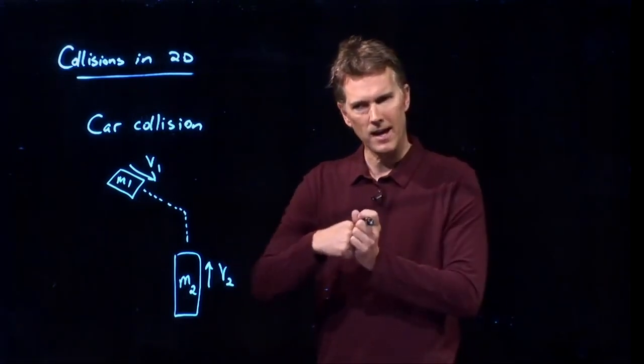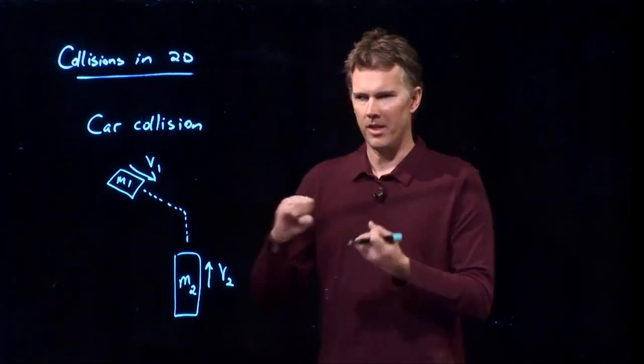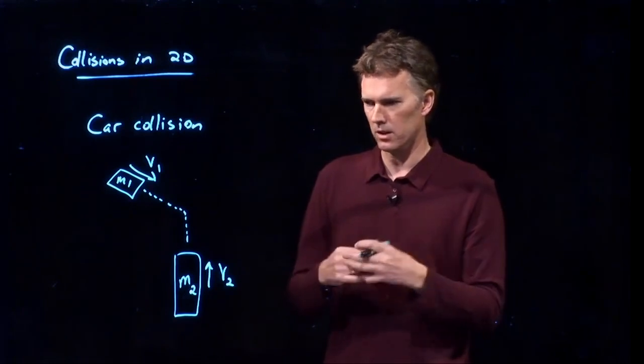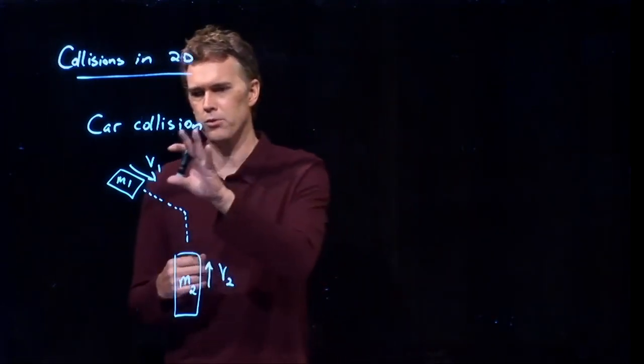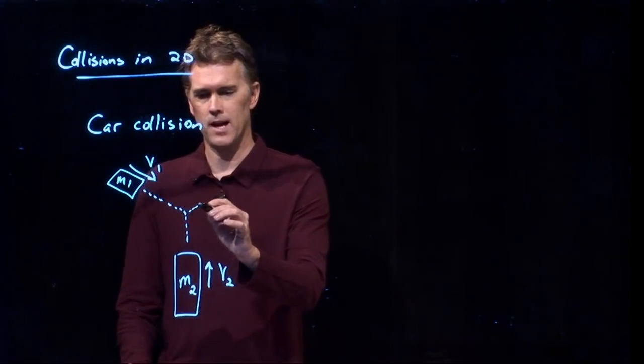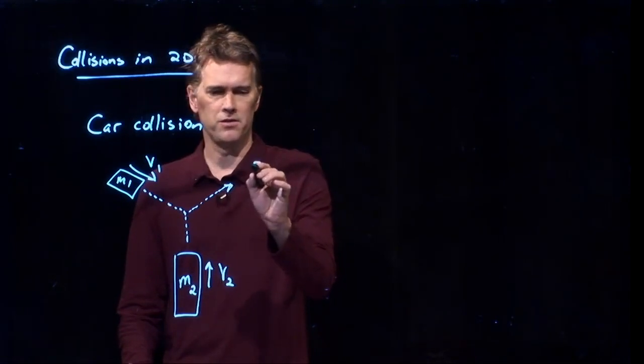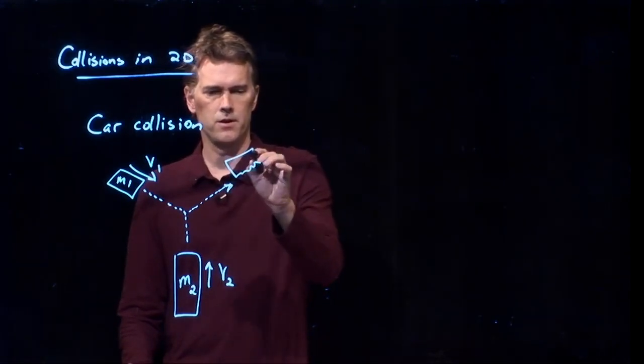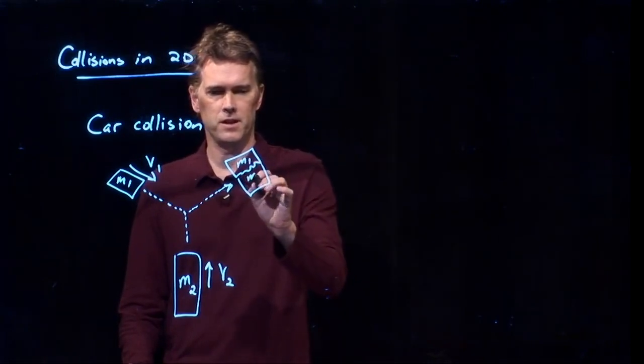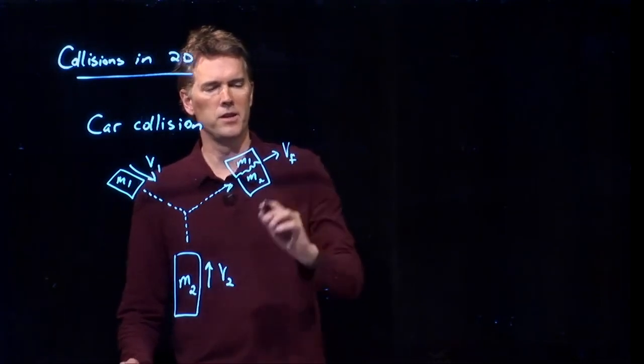When cars collide, they tend to sort of stick together because the bumpers get deformed, things bend, there's a whole bunch of energy lost in that collision. And so it is truly an inelastic collision. So after they collide, they're going to head off in some new direction, and they are going to be stuck together. There's car 1. There's car 2. They are stuck together, and they're moving at some final speed v sub f.